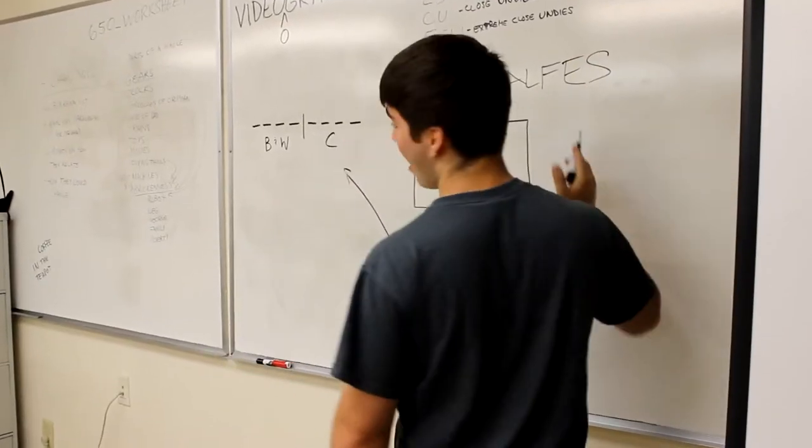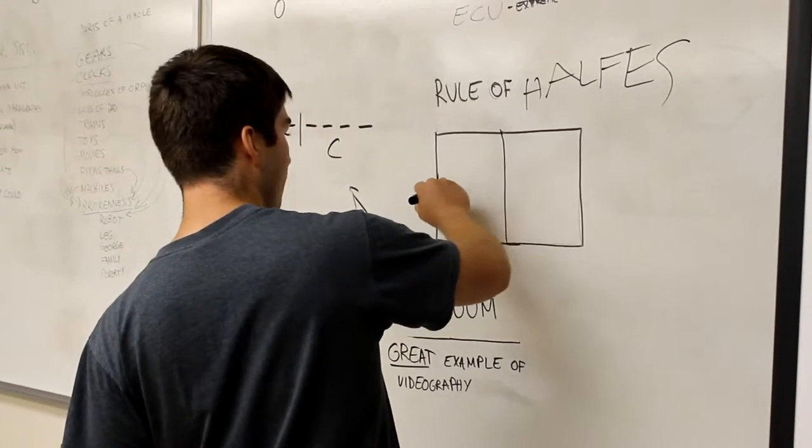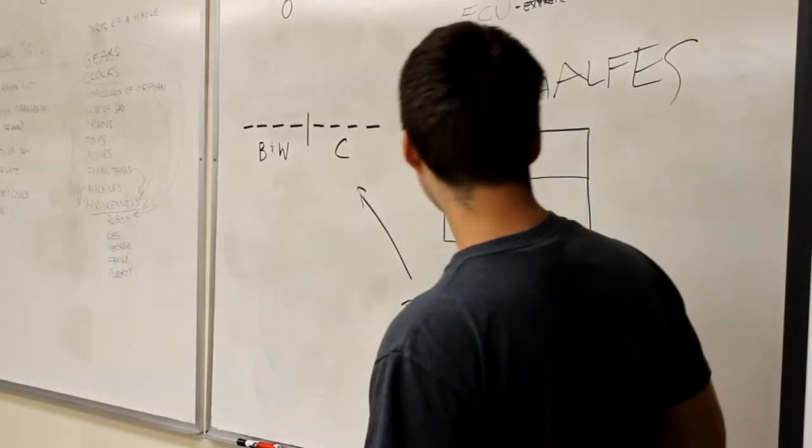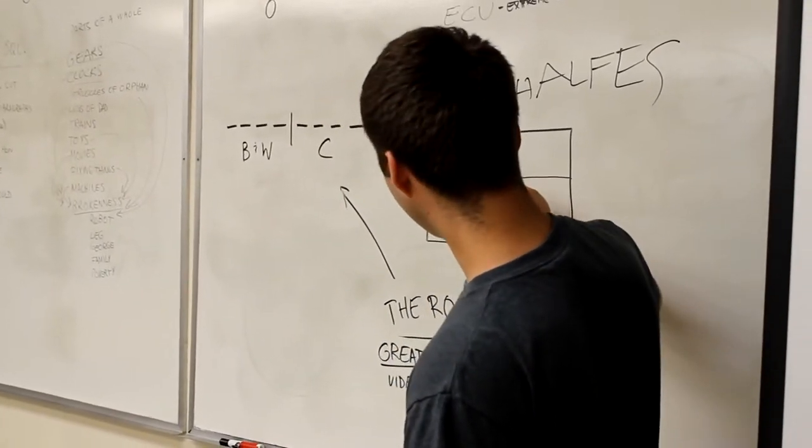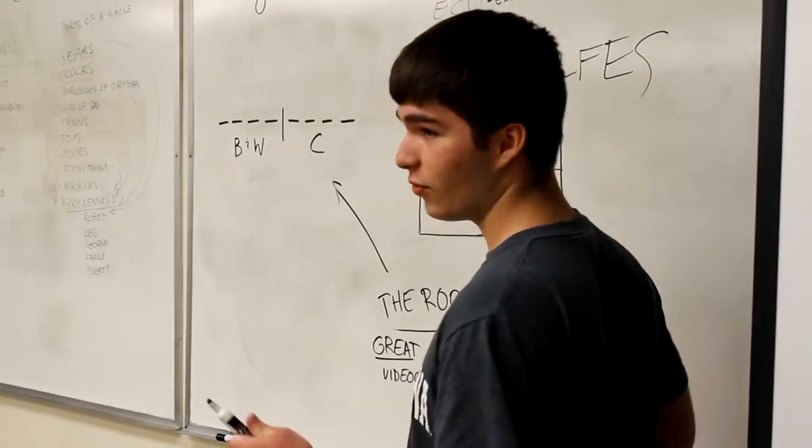So the rule of halfes states that you divide the panel into halves horizontally and vertically, and at the intersection of those lines, put your subject right in the middle because it's more visually appealing.